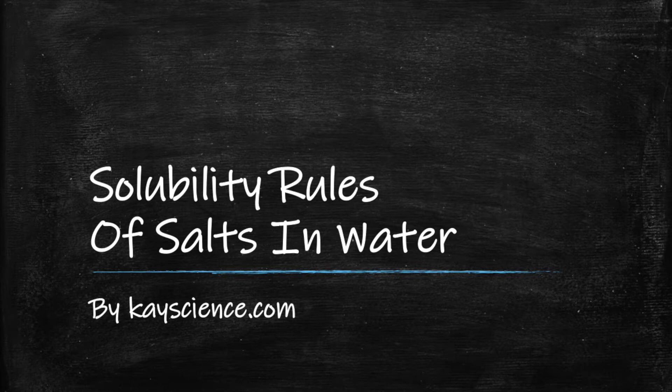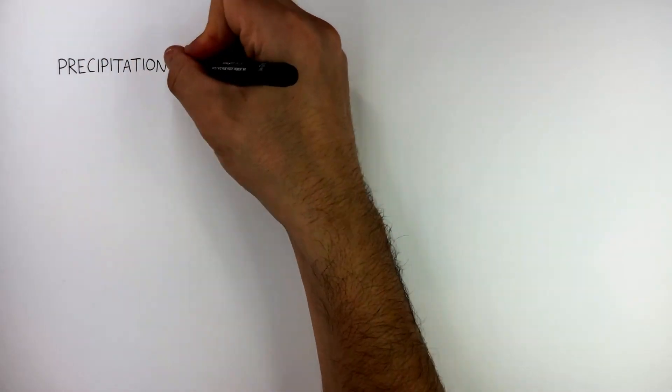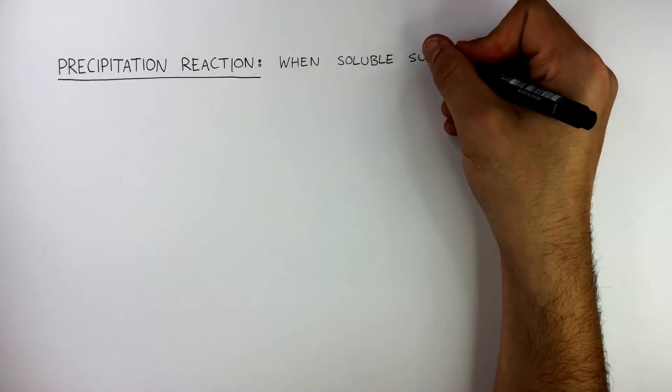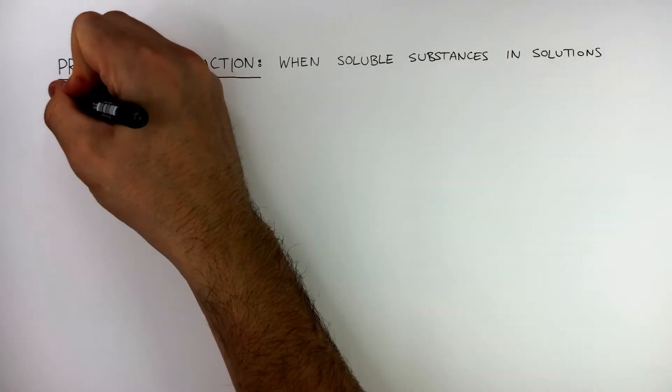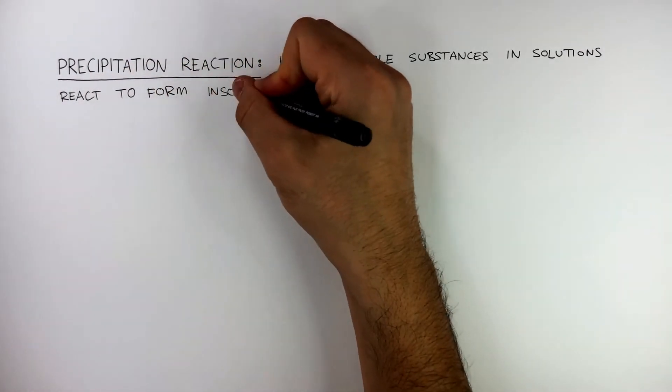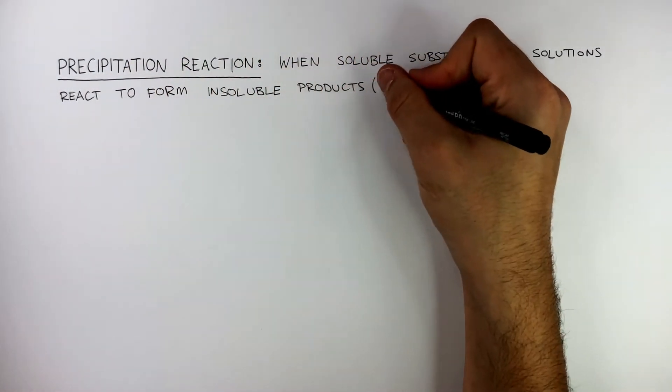Solubility Rules of Salts in Water by Kscience.com. A precipitation reaction is when soluble substances in solutions react to form insoluble products, also known as a precipitate.